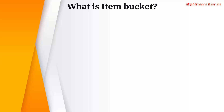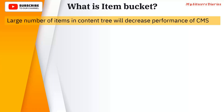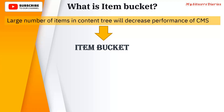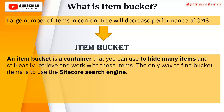What is an item bucket? A large number of items in the content tree will decrease the performance of the CMS. To improve performance, Sitecore provides an option called item bucket. An item bucket is a container that you can use to hide many items and still easily retrieve and work with them. The only way to find bucket items is to use the Sitecore search engine.